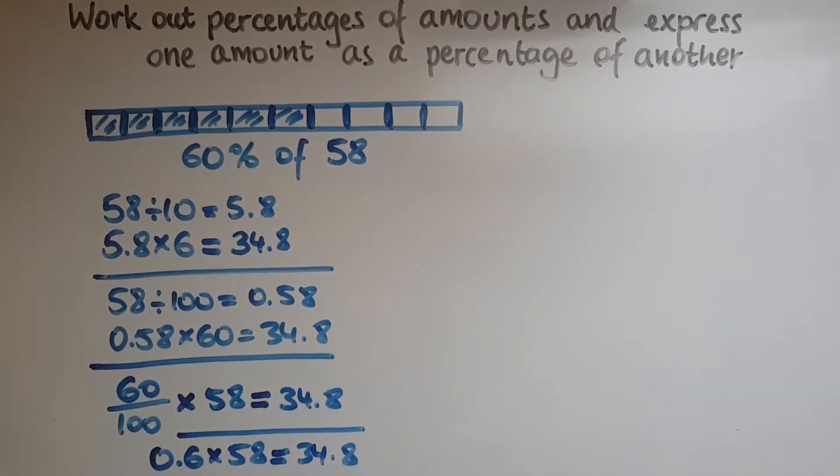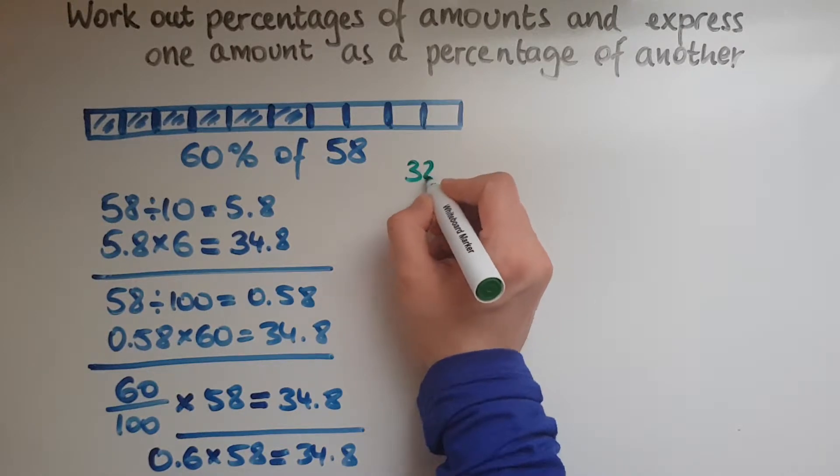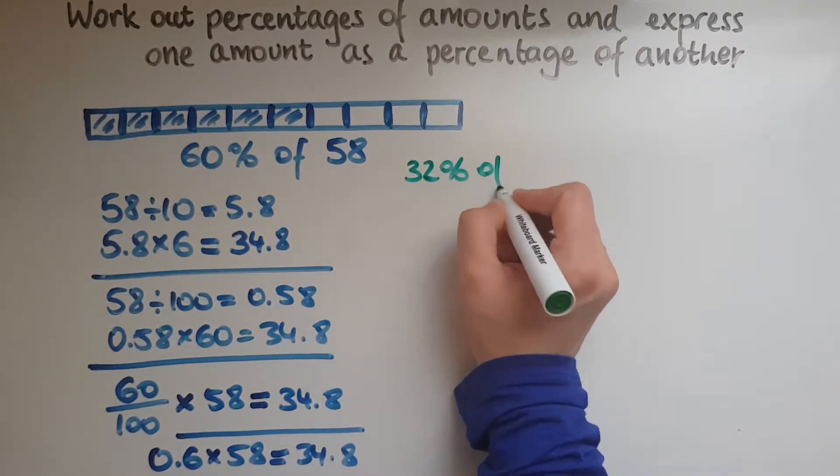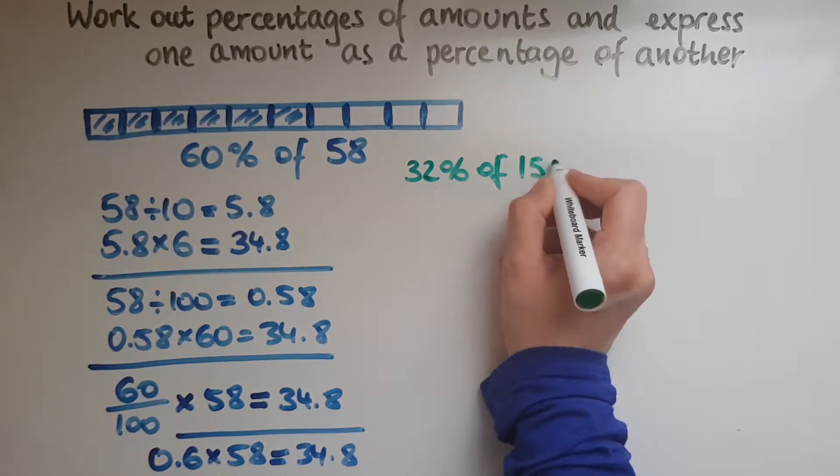So now we'll pick another example just to illustrate. So let's say we want to work out 32% of 152.